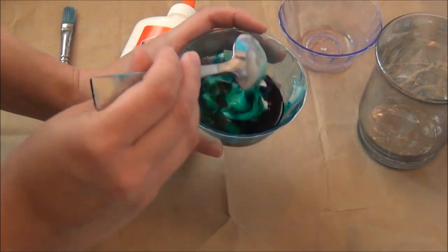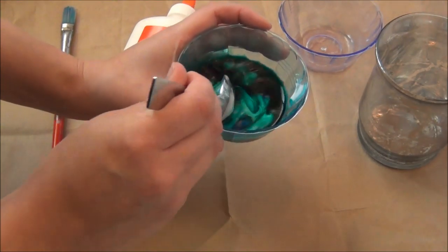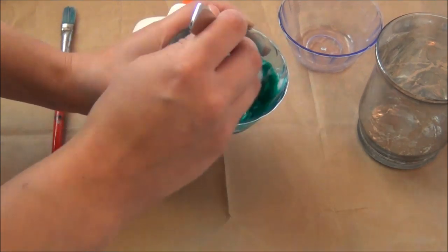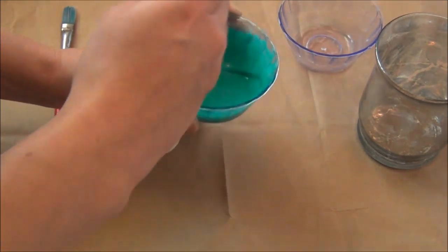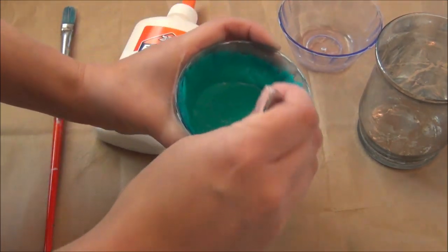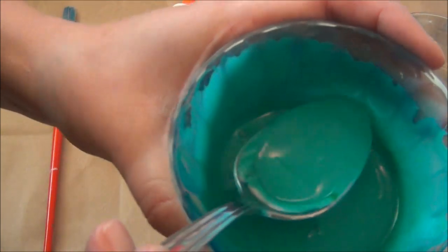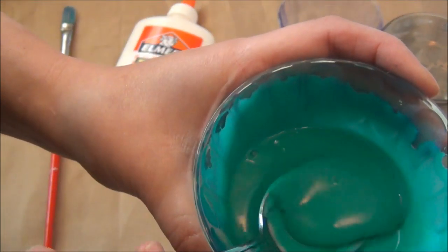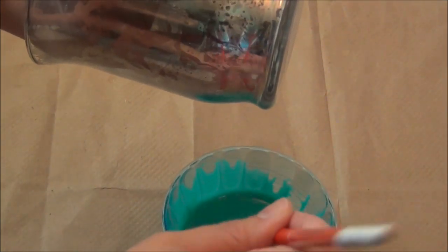Then mix that together. Your mixture should look like this. And next you're going to paint it as evenly as possible over the entire outside of your jar.